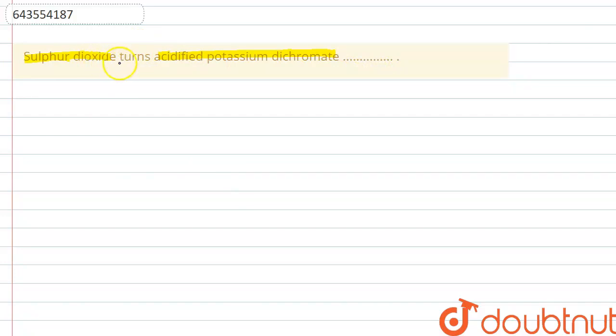For the reaction that is taking place between sulfur dioxide and acidified potassium dichromate, the reaction that takes place is: sulfur dioxide SO2 reacts with K2Cr2O7 plus H2SO4 to give K2SO4 plus Cr2(SO4)3 plus water.